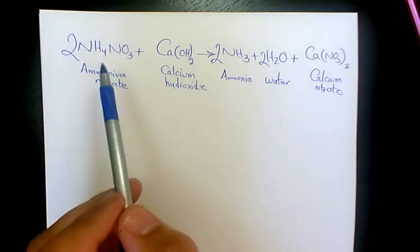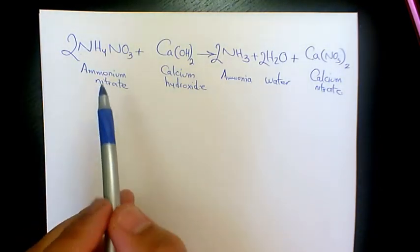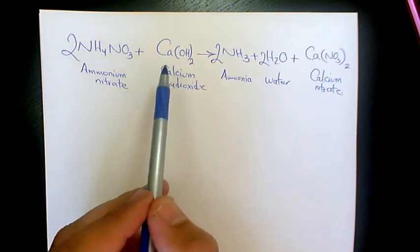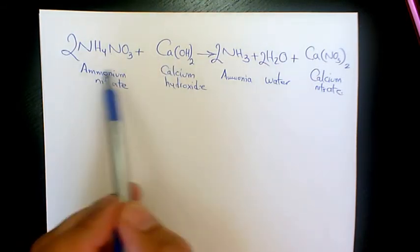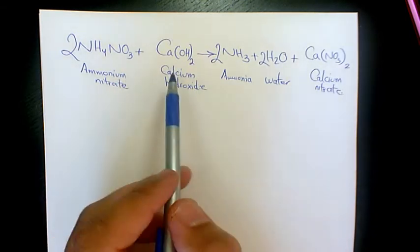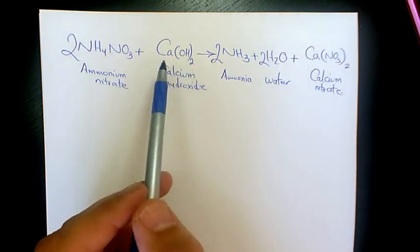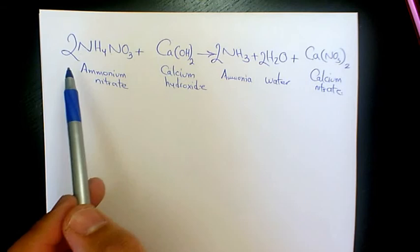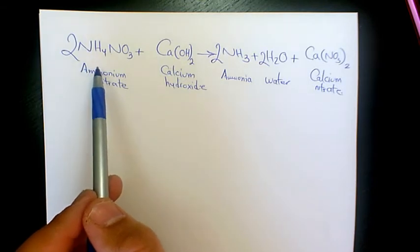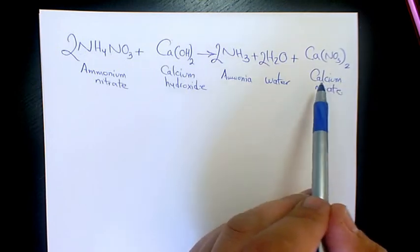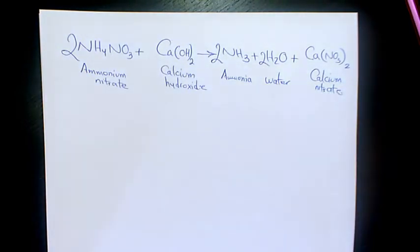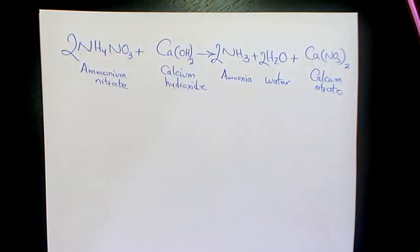So we have for this reaction stoichiometric relationship: for every mole of calcium hydroxide we need 2 moles of ammonium nitrate. So whenever we have 1 mole of calcium hydroxide with 2 moles of ammonium nitrate, we will produce 2 moles of ammonia, 2 moles of water, and 1 mole of calcium nitrate. That's the reaction between ammonium nitrate and calcium hydroxide.